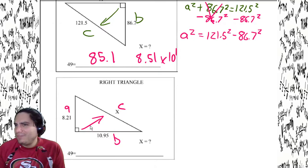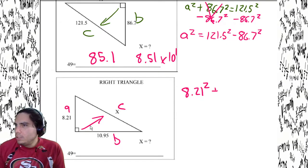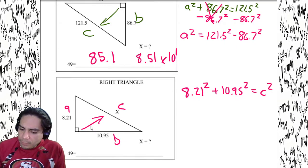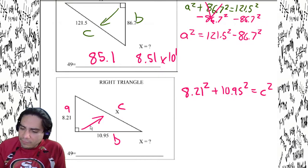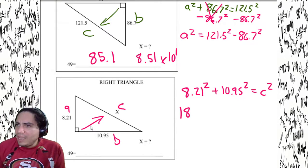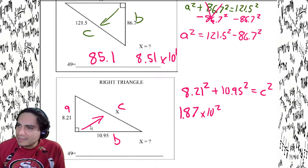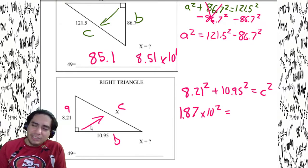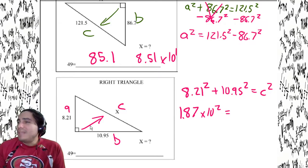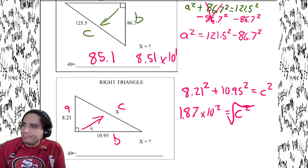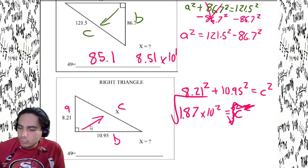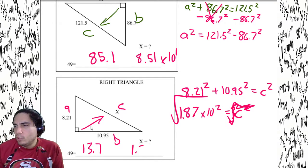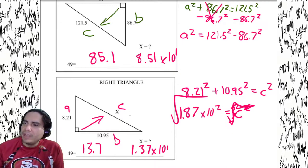Let's label this one. We've got a and b — we're missing c, so we're going to add them. 8.21 squared plus 10.95 squared equals c squared. I end up with 187, or 1.87 times 10 to the second — but that's not the answer. That's c squared. Last step: square root it. We get 13.7, completely reasonable.